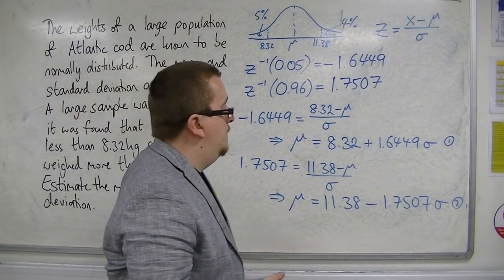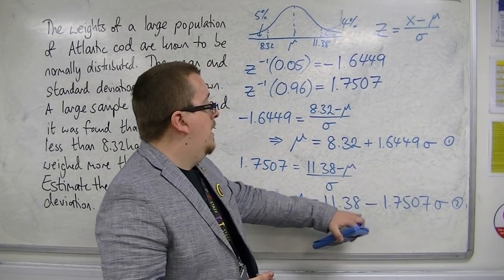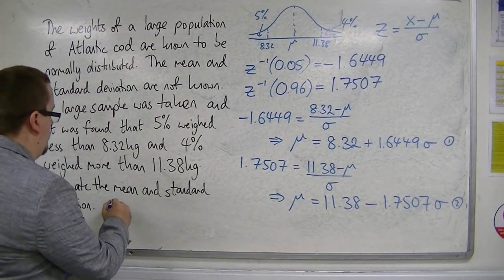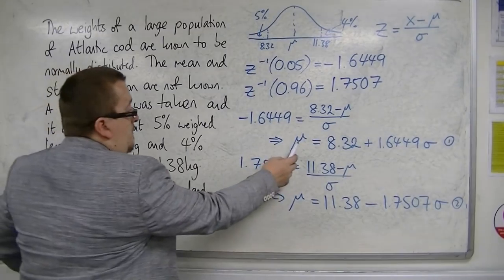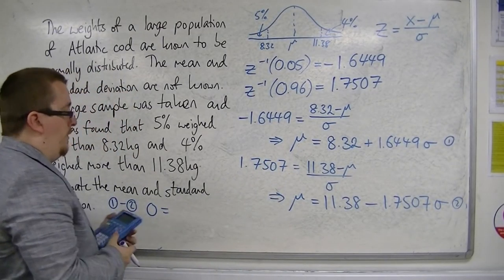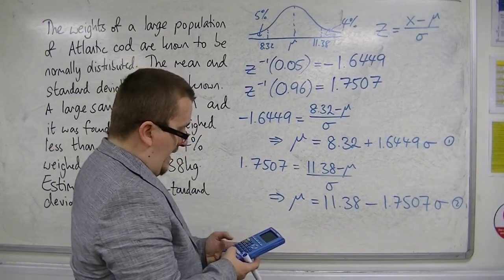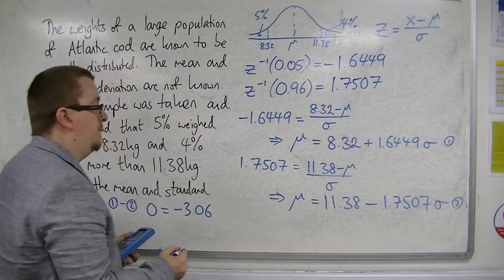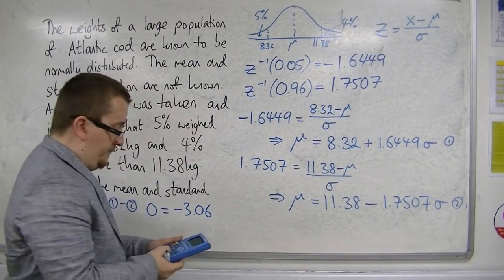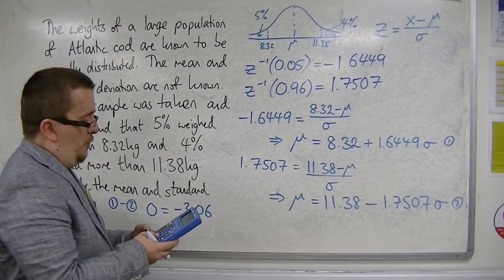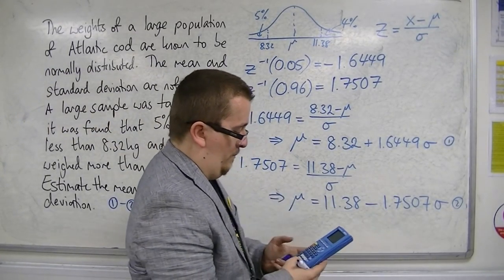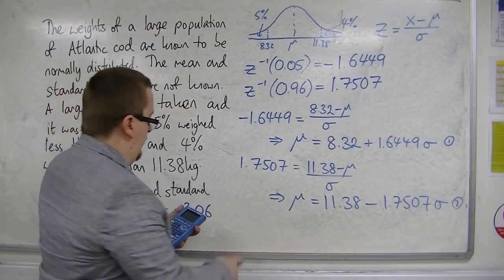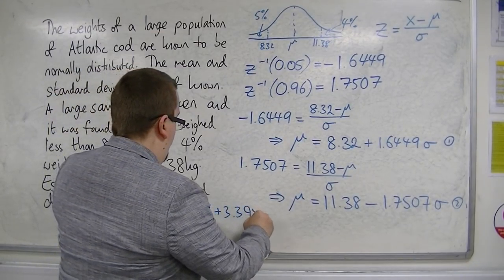So now, what we can do is we can do equation 1 take away equation 2. We're going to have mu take away mu, so we're going to have 0. We've got 8.32 take away 11.38, so that's minus 3.06. And then we've got this take away this, so 1.6449 take away a minus, so plus 1.7507, is 3.3956 sigma.